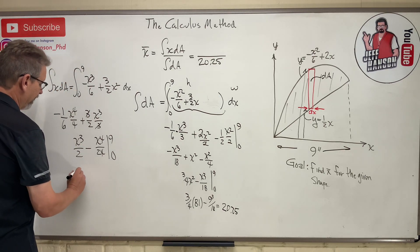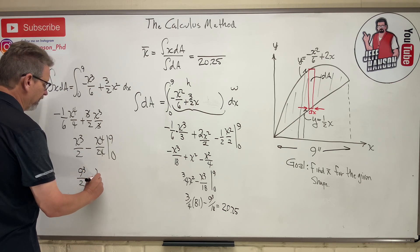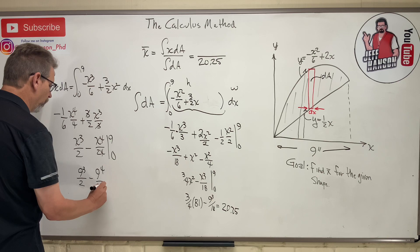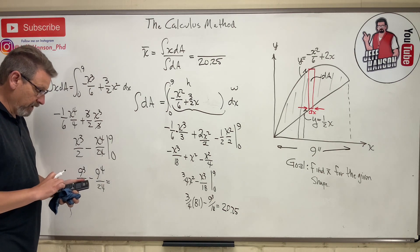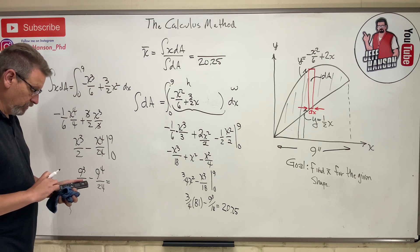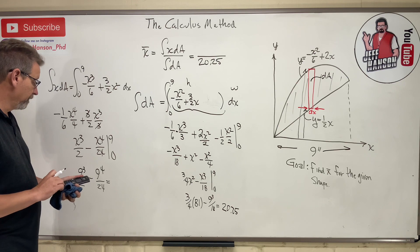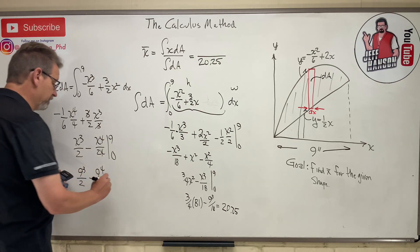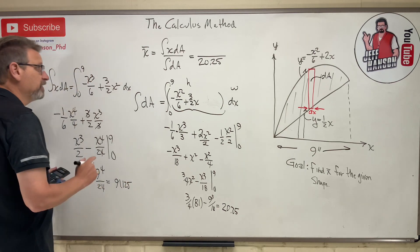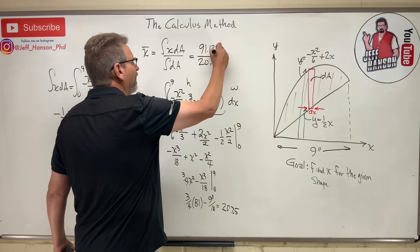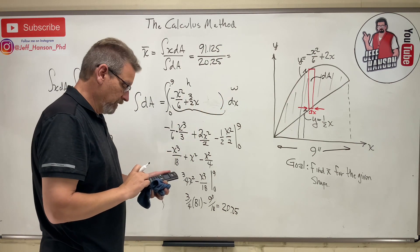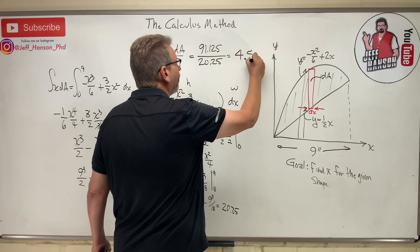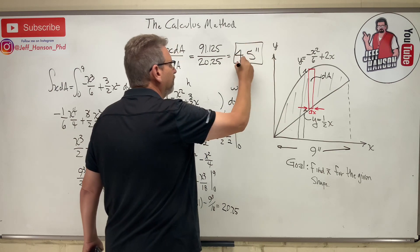Substituting 9: 9³/2 minus 9⁴/24. 9⁴ divided by 24 is 91.125. That goes in the numerator: 91.125. So x-bar equals 91.125 divided by 20.25, which equals 4.5 inches. So there's my x-bar.